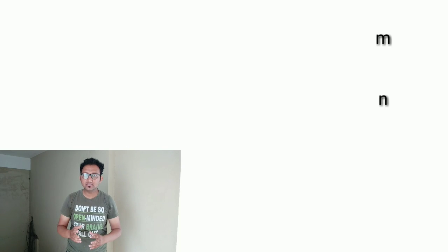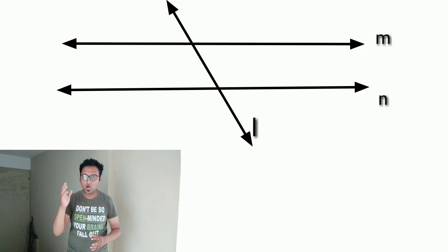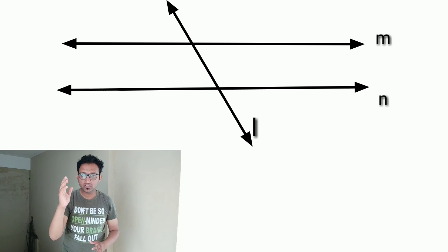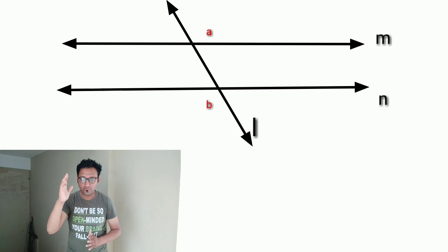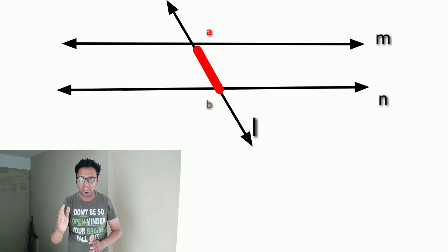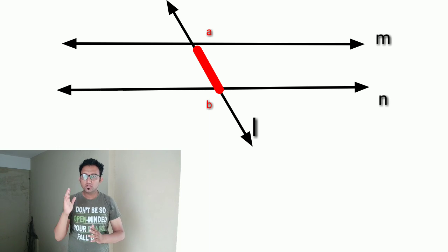Line L intersects line M and N at different points, point A and point B. Now you can find line segment AB. So the angles which have the common line segment AB as an arm, these angles are called interior angles.